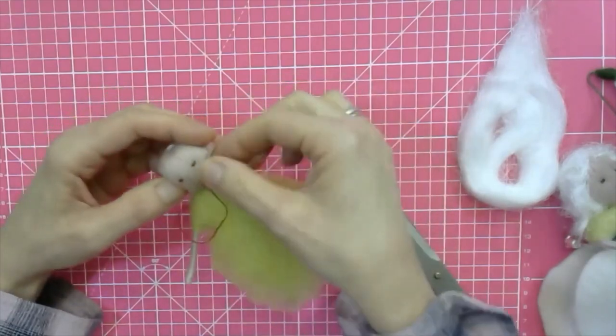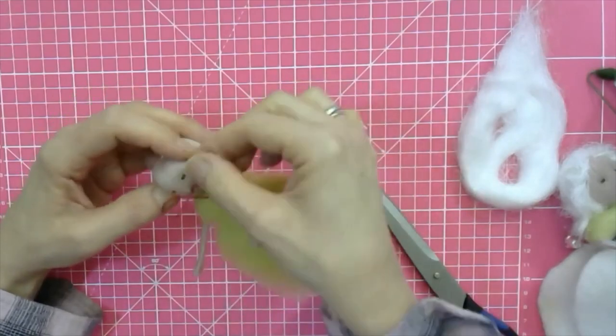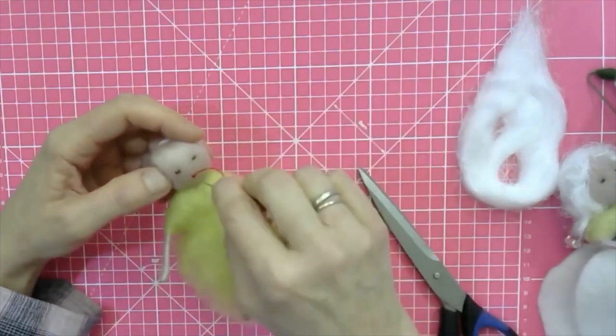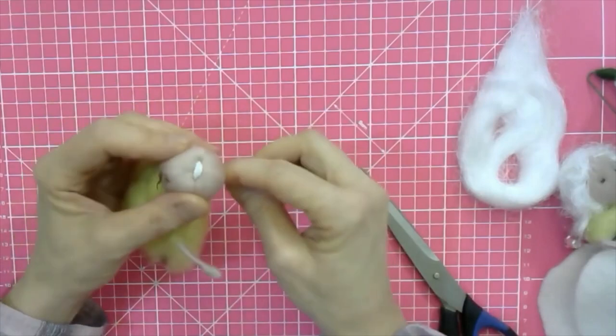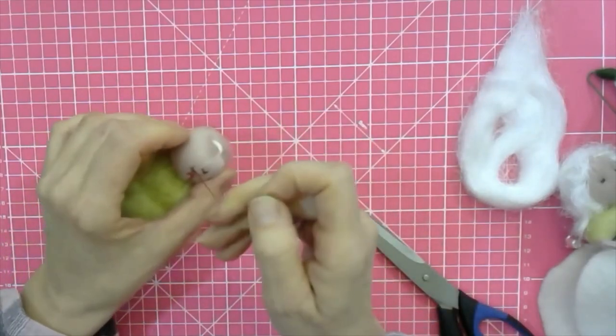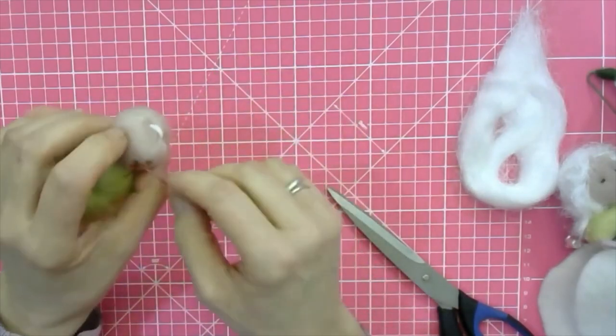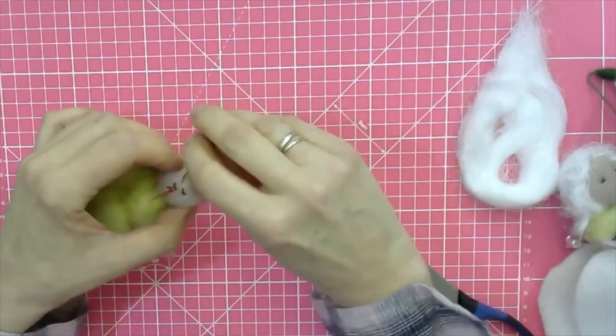Then you do exactly the same what you did with the eyes. Go back out through the back. If you wish to give your fairy a face - if we've done lots of fairies without faces, that's fine too. And then just secure the thread at the back again. It's almost a bit tight because I don't want to pull.